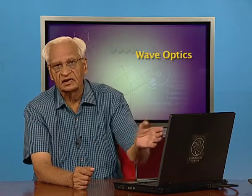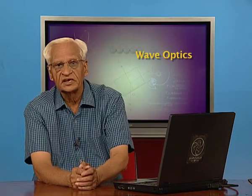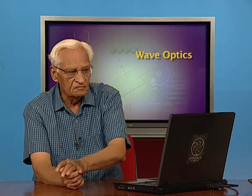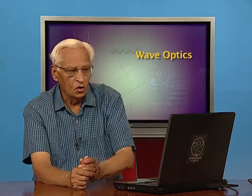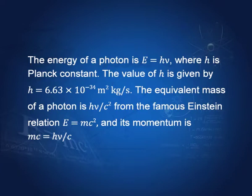Because of the dual nature of matter — which we shall learn about very soon, as it is the next topic — light waves also behave like particles. These particles are called photons. The energy of a photon is equal to hν, where h is Planck's constant having a value 6.63 × 10⁻³⁴ m² kg/s. The equivalent mass of the photon, from Einstein's relation E = mc², is hν/c², and momentum is mc = hν/c.